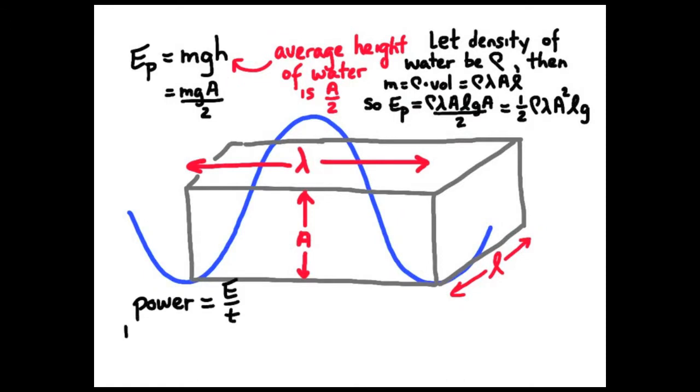We want the power in this wave, so we're going to take this energy, the gravitational potential energy, and divide it by time. But actually we get one wave for every time equals capital T, the period. So we're going to divide that expression by capital T and get an expression for power of that water wave.